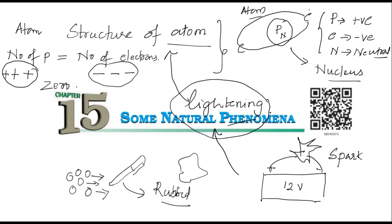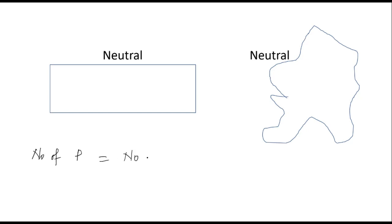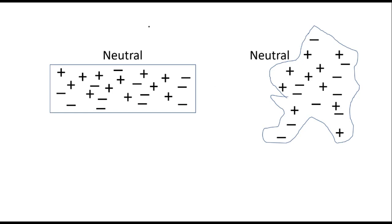So keeping these demonstrations in mind, let us take some objects. Let's take a kind of a rod — you can think of this as a plastic rod — and another material, which you can take as a cloth. Both are neutral. Can you tell me why are they neutral? Going back to the structure of atom: the number of protons will be equal to the number of electrons. So however many positive charges there are, so many negative charges will be there.